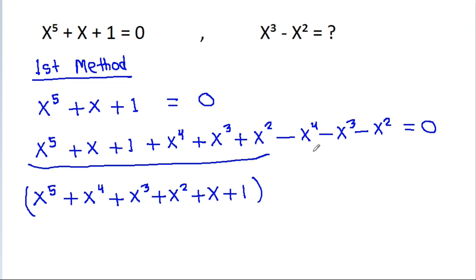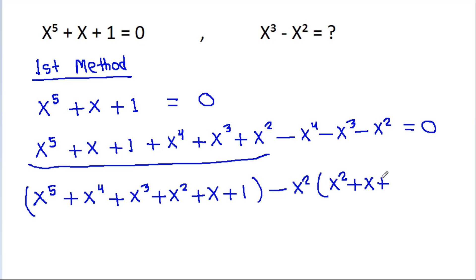And here, if we take minus x square common, then it is x square plus x plus 1 is equal to 0.